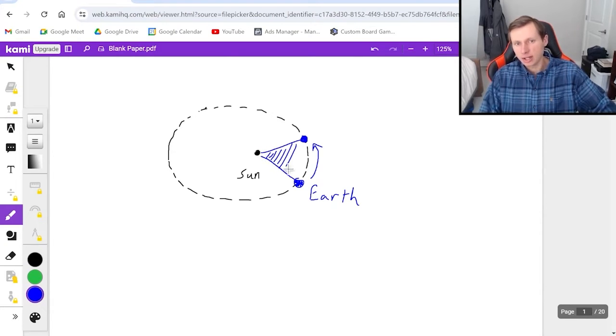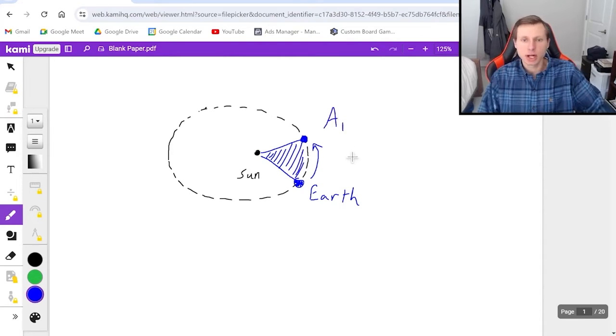and I shade in the area like this, and I call this area A1, and this was done in a time period I'll call T1, where T1 can be a month, two months, whatever.